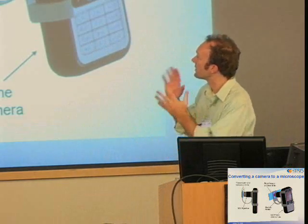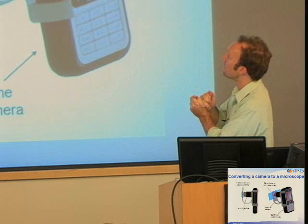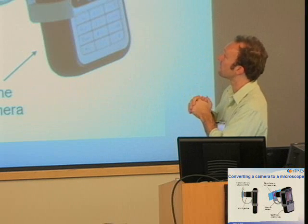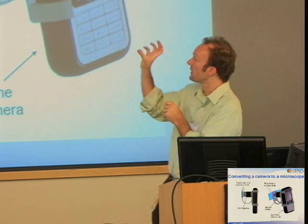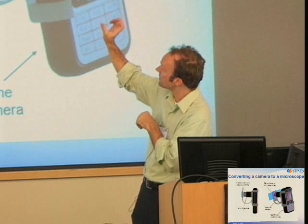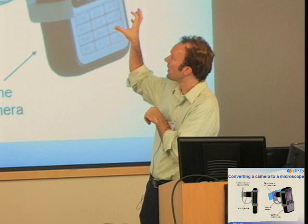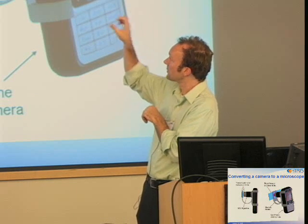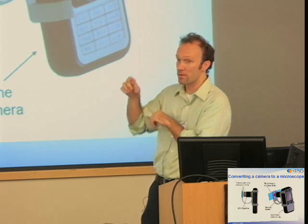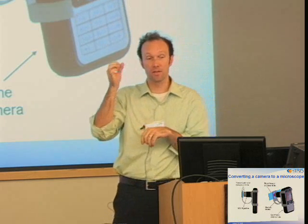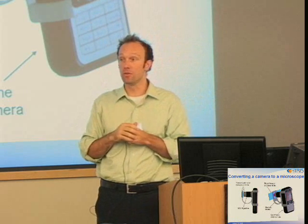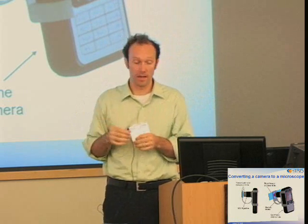The design looks something like this: a set of objective-like lenses transfers the object image into the same CMOS sensor that is currently used to collect pictures.